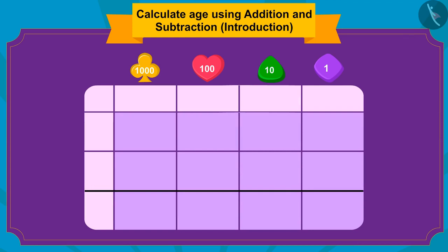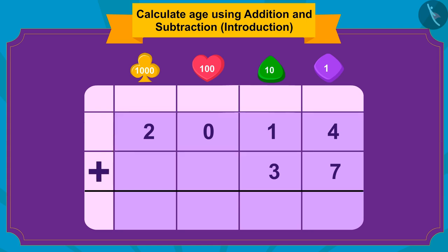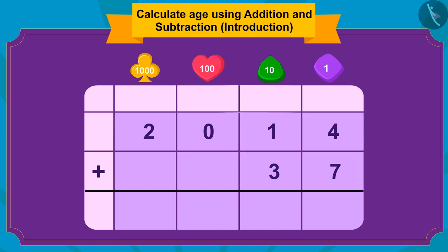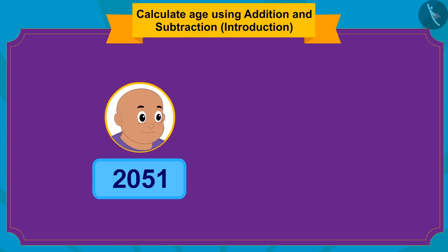In which year was Bablu born? 2014. And what age is given? 37. So, what shall we do? Exactly — 37 must be added to 2014. If you add 37 to 2014, how much is that? Right — 2051. In this way, Bablu will be 37 years old in 2051.